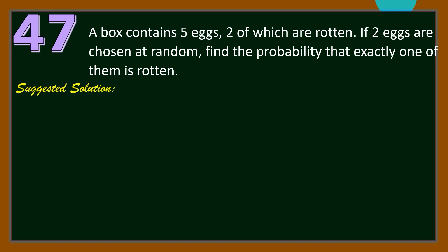For our solution to number 47, let E be the event that exactly 1 of the 2 eggs chosen is rotten. Hence, the probability of E is equal to: if there are 2 rotten eggs, then getting 1 of the 2 gives 2 combination 1. By the multiplication principle, we multiply by 3 combination 1 since there are 5 eggs and 1 chosen will not be rotten. In the denominator, the sample space is 5 combination 2.